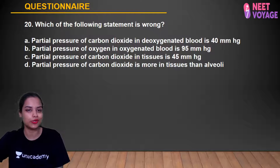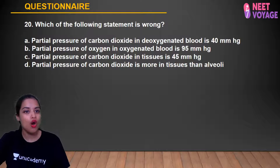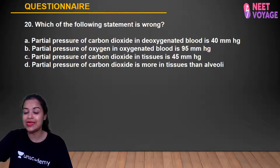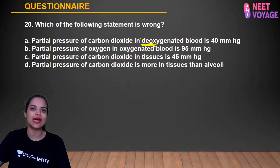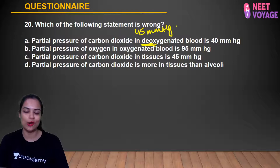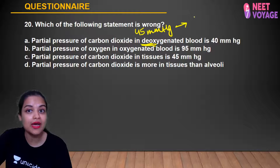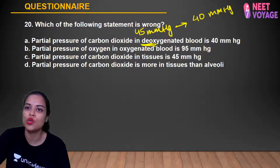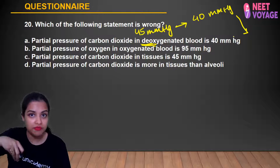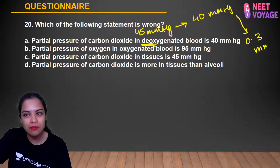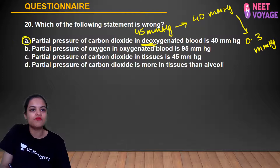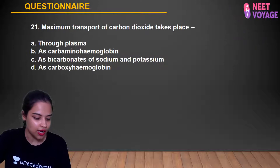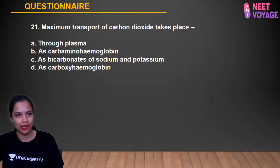Question 20: Which statement is wrong? Partial pressure of CO2 in deoxygenated blood is 14 mmHg — this is WRONG. In deoxygenated blood, pCO2 is 45 mmHg (high CO2). CO2 moves from deoxygenated blood (45 mmHg) into alveoli (40 mmHg) — from higher to lower partial pressure — and is exhaled into the atmosphere (0.3 mmHg). A is the incorrect statement. Alok, Sabah, Anusha, Shashank, and Tanusha gave the correct answer A.